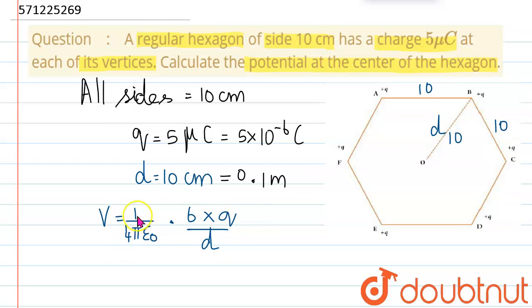Substituting all the values: 1/4πε₀ is a constant equal to 9 × 10⁹, then 6 times Q which is 5 × 10⁻⁶, divided by D which is 0.1. Solving this, we get the potential at the center of the hexagon V = 2.7 × 10⁶ volts.